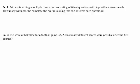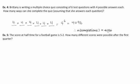In example four, we've got a girl writing a multiple choice quiz. She's got six test questions, four possible answers each. How many ways can she complete the quiz, assuming she answers every single question? Here are our six questions, and for each of them we're showing our four options. So we've got four times four times four times four times four times four, which is none other than four to the power of six, so 4,096 ways to complete the test.